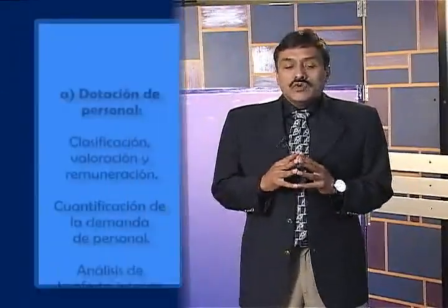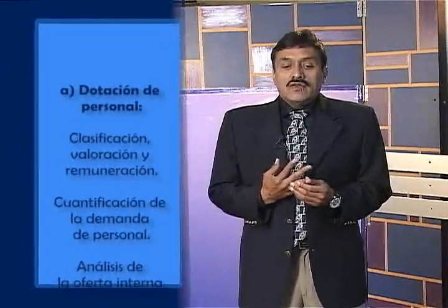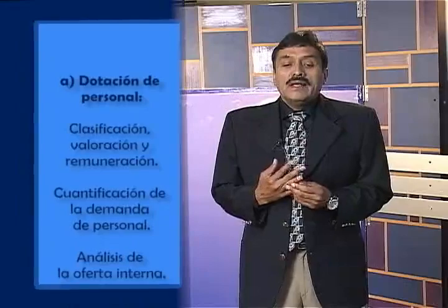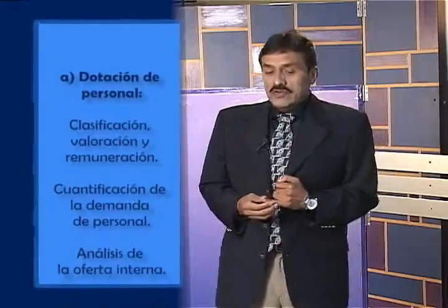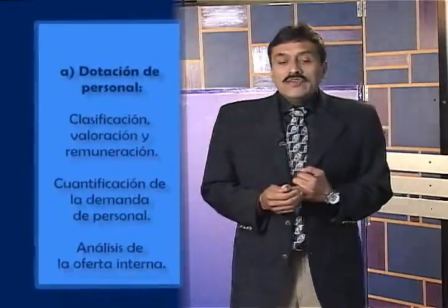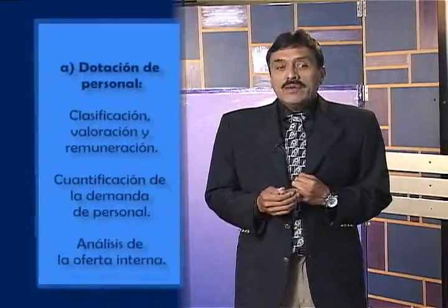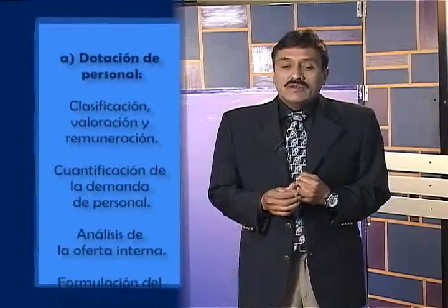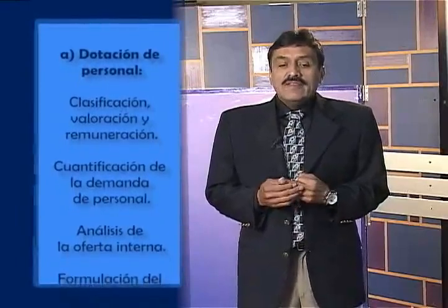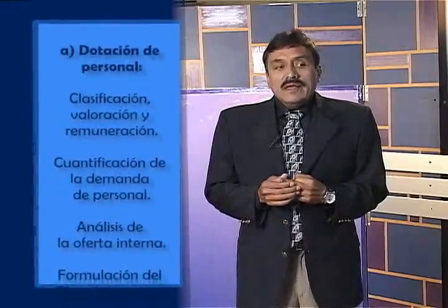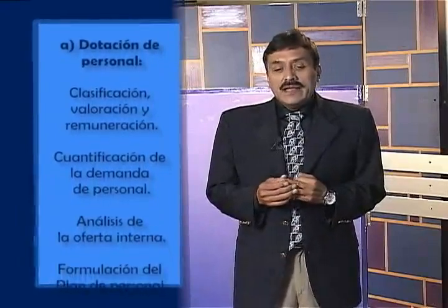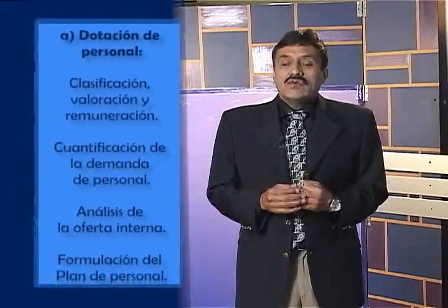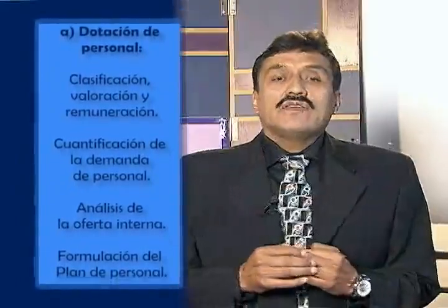El subsistema de dotación de personal tiene ocho procesos. Entre los que se identifica: clasificación, valoración y remuneración, que habla cómo se clasifican los puestos de trabajo en el sector público y cómo se valoran en relación directa con la retribución o remuneración. También la cuantificación de la demanda de personal, que implica identificar, cuantificar e inventariar todas las demandas de personal necesarias para que la organización cumpla los objetivos definidos en el POA.